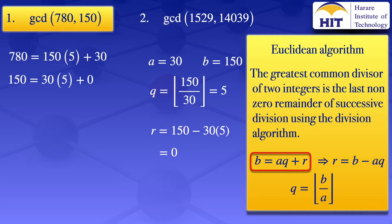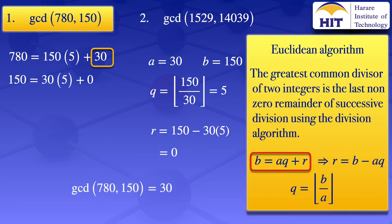In this iteration of the division algorithm, we have a remainder of 0, so that's where we stop. We then look at the last non-zero remainder — the one before it — which was 30. So using the Euclidean algorithm, the last non-zero remainder is the greatest common divisor, giving us 30. Therefore, the greatest common divisor of 780 and 150 equals 30.